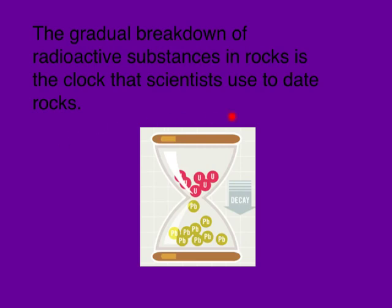The reason that we can find out how long these rocks have been around is because of radioactivity. We know that the gradual breakdown of radioactive substances in rocks is the clock that scientists can use to figure out how old the rocks are. As the rocks break down, they're going to change from a radioactive material to some other material, and we can tell how long that rock's been around by how much it has decayed.